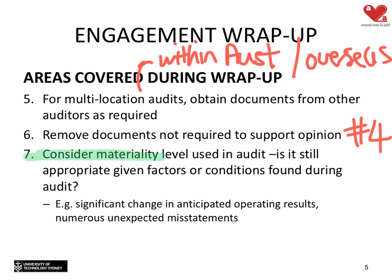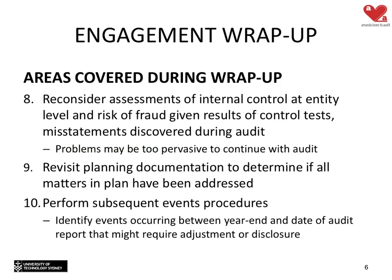The last step is to go back and reconsider the materiality set at the planning stage, as circumstances change throughout the audit. Typically, if we need to change our materiality, it tends to go down — not increase — because as we find more risk we become interested in more and smaller misstatements. We then ensure internal control assessments and planning documentation are correct, before moving to subsequent events procedures under ASA 560.